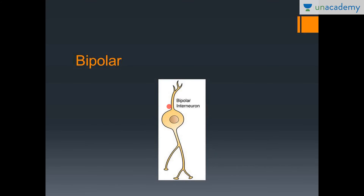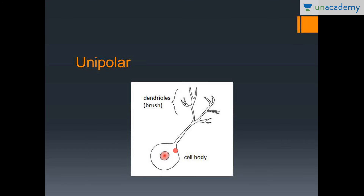Here is an example of a bipolar neuron — you can see only two processes arising from the cell body. This type is present in the retina, which is the classic example of a bipolar neuron.